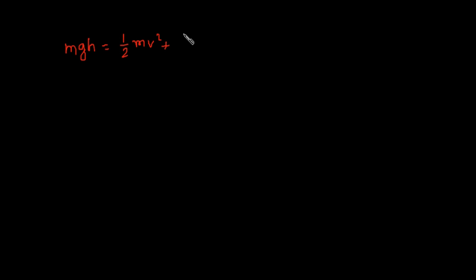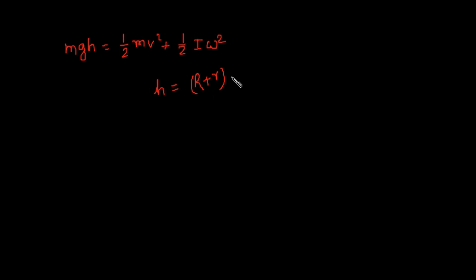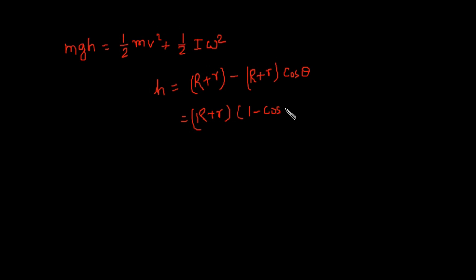From the figure, the height H is equal to (R + r) minus (R + r)cosθ, which simplifies to (R + r)(1 − cosθ).